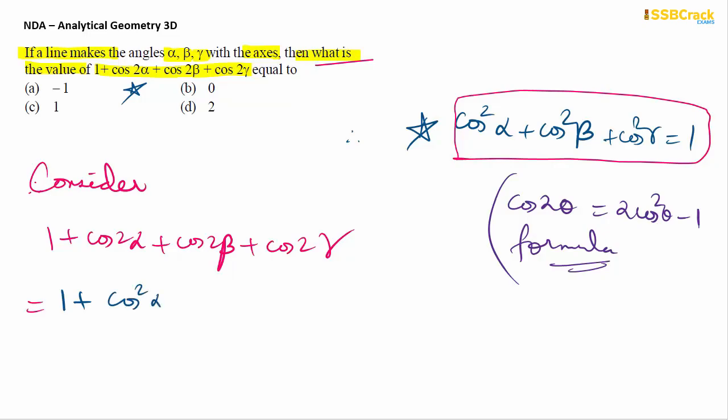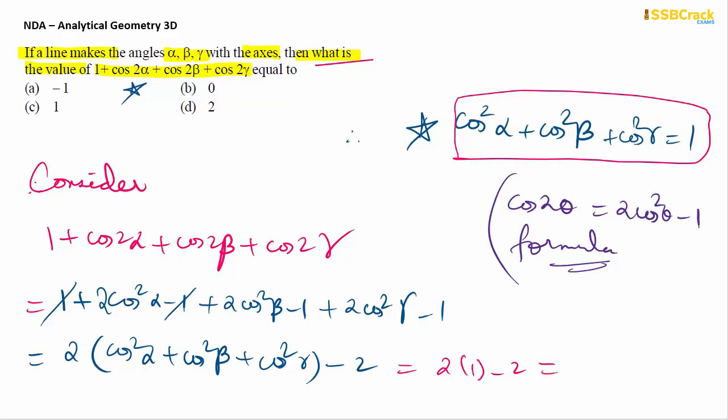The expression becomes 1 + (2cos²α - 1) + (2cos²β - 1) + (2cos²γ - 1). This simplifies to 2(cos²α + cos²β + cos²γ) + 1 - 3 = 2(1) - 2 = 0. Since cos²α + cos²β + cos²γ = 1 when a line makes angles α, β, γ with the coordinate axes, the answer is 0, which is option B.